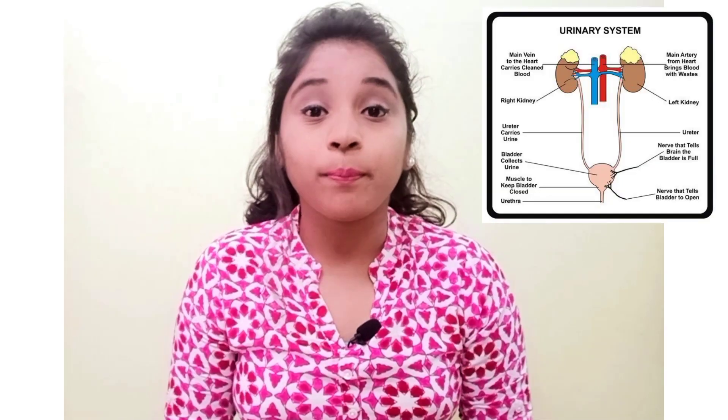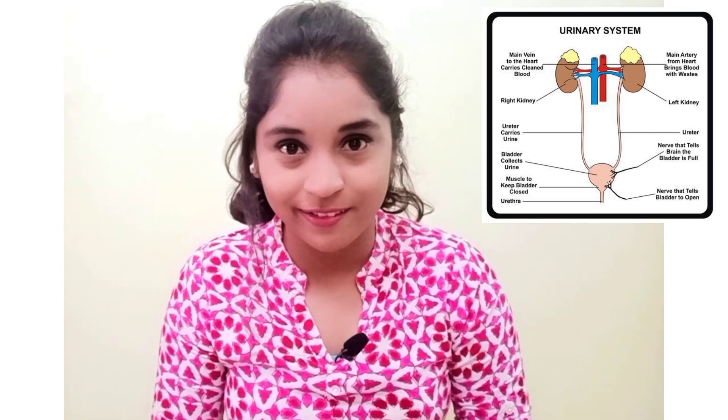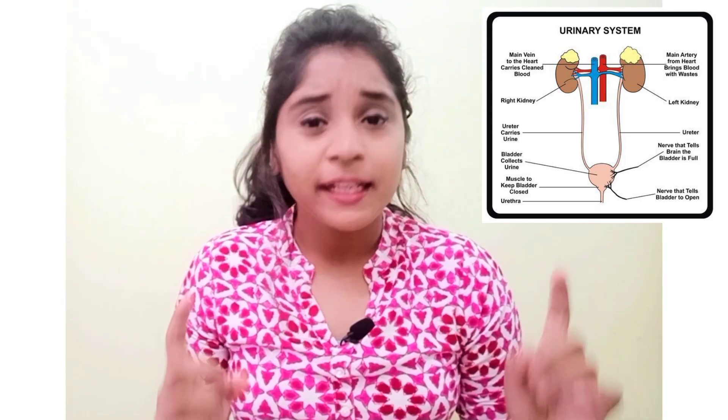The renal system includes a pair of kidneys, a pair of ureters, a urinary bladder, and a urethra. The kidney produces urine, the ureter transports the urine to the bladder, the bladder holds the urine until it is expelled, and it is expelled through the urethra.